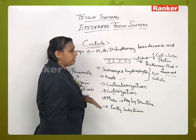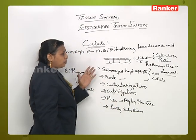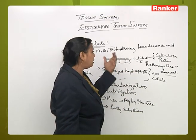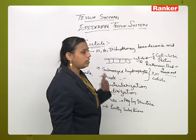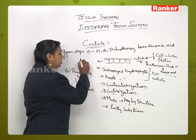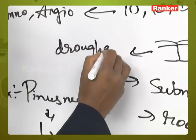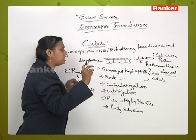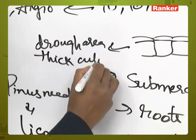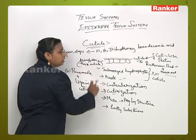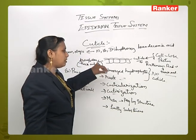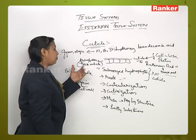When we consider the thickness of the cuticle layer, it is not uniform across all plants — it varies depending upon the species and varieties. For example, in plants growing in drought areas, the cuticle thickness is very thick. The thickness of the cuticle will be much greater compared to other plant material.